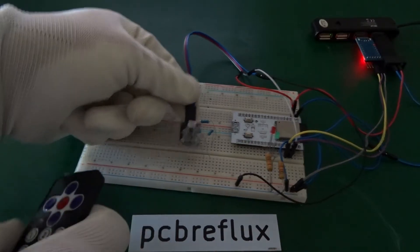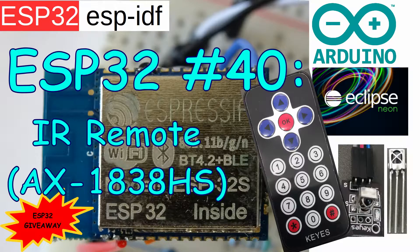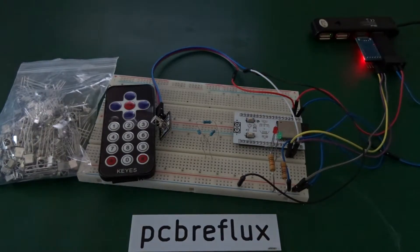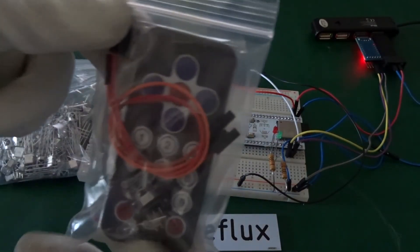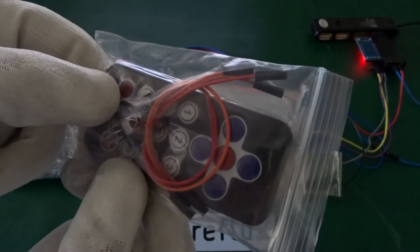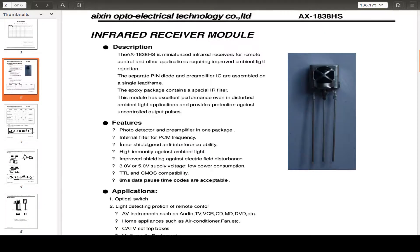As an example, I'm using the AX1838HS from the Axon Opto Electrical Technology Company. This is an infrared receiving diode with an integrated circuit, so you only need to decode the timing output of the small module. Let's start by having a look into the datasheet.